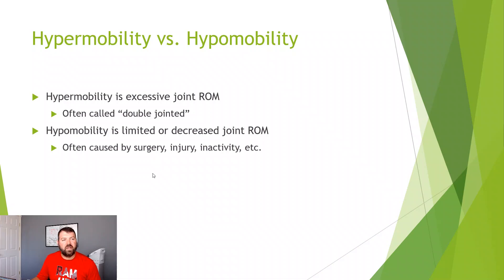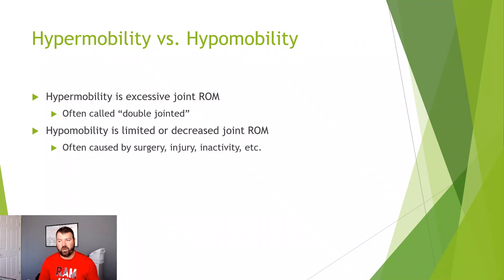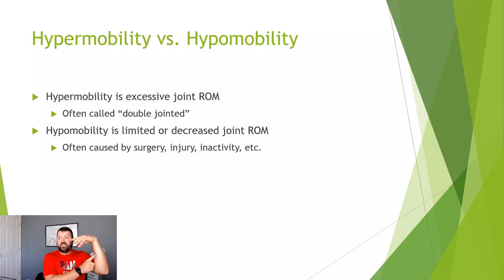Hypermobility is excessive joint motion — a lot of people often call this being double-jointed, but it's really just hypermobility, which is more common in females than males. These people simply have a greater range of motion — it's not good or bad, just how they are. One test for this is wrist flexion where you try and touch your thumb to your forearm. People who are hypermobile can easily touch their thumb to the wrist — that's a quick test to identify hypermobility.